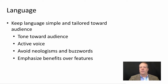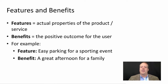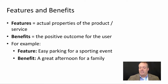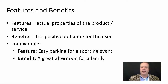A classic example people often talk about is technology — you wouldn't talk about the exact pixel resolution of your screen necessarily; you might instead talk about the fact that it has a vibrant display or vibrant colors and images. Features are the actual properties of the product or service, whereas benefits are the positive outcome for the user. For example, a feature is that a sporting event has easy parking; the benefit is that it's a much greater afternoon for the family. People don't choose a sporting event just because it has easy parking — they go for the event itself. The easy parking is a feature they like, but what makes it a good experience overall is the benefit you should emphasize.